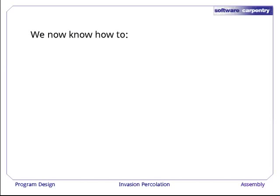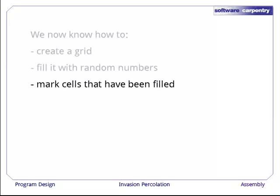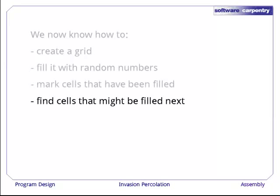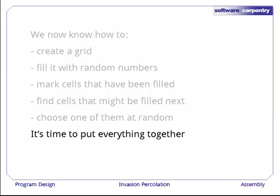In this episode, we'll see how to assemble the bits and pieces we've already developed to create a working program. As you recall, we now know how to create a grid, fill it with random numbers, mark cells that have been filled, find cells that might be filled next, and choose one of them at random. It's time to put everything together.